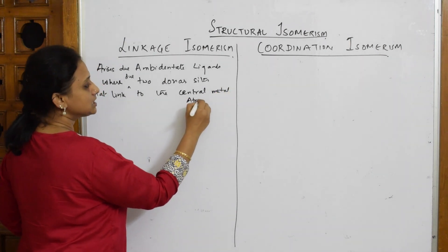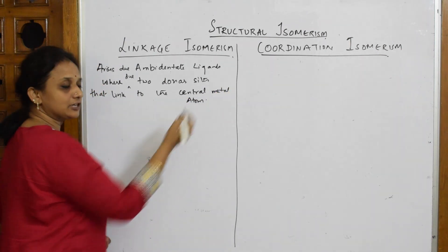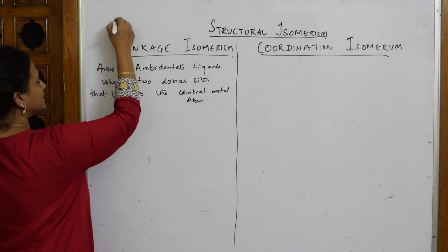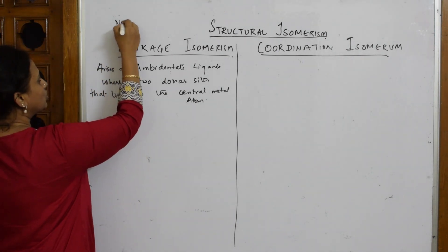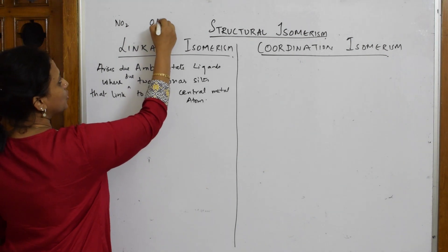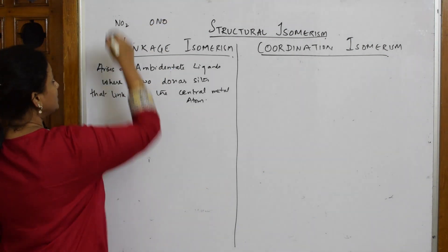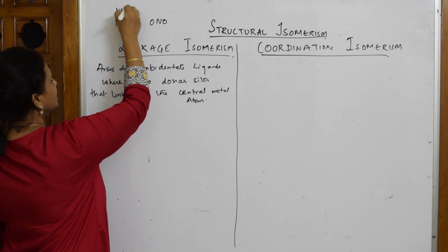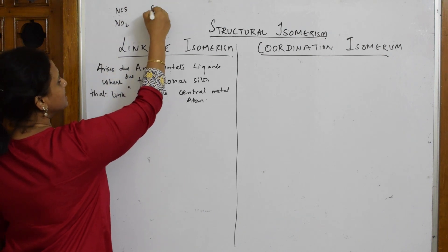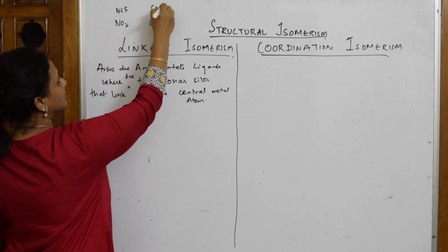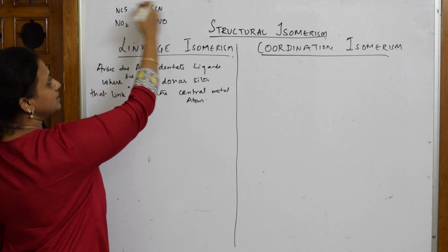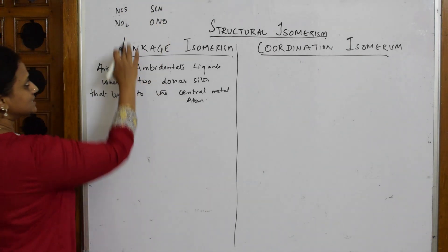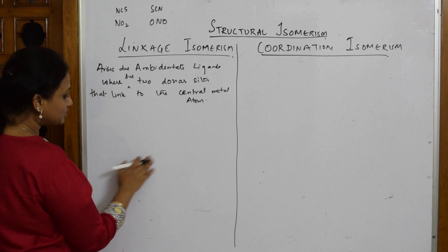Let's see an example. The ambidentate ligands we studied are NO₂, which links as ONO, and NCS (thiocyanate) versus SCN (isothiocyanate). These are the two common ambidentate ligands.